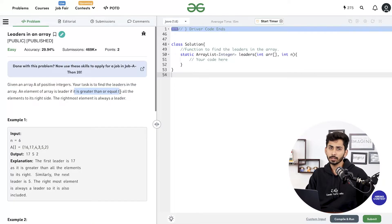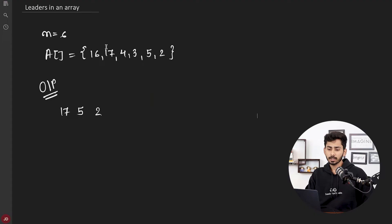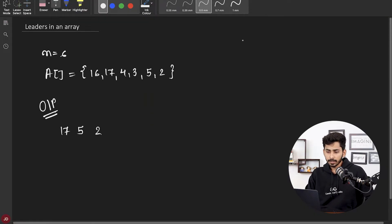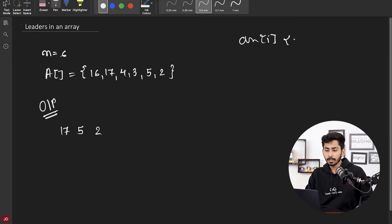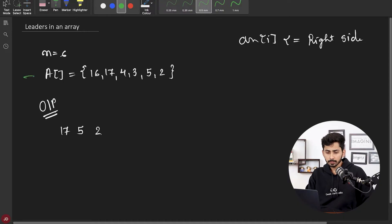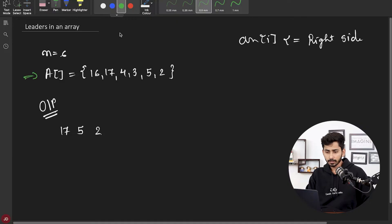Let's understand with the help of an example using the input given to us. Leaders means if array[i] is called a leader, then all the elements on its right hand side should be lesser than or equal to the current element. So can 16 be a leader? No, because 17 is present on its right and is not lesser than 16. Can 17 be a leader? Yes, all elements on its right hand side are lesser than or equal to 17.